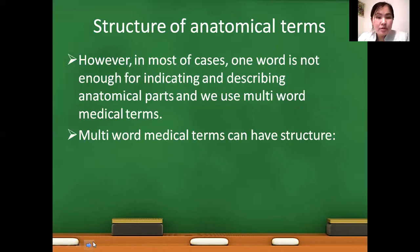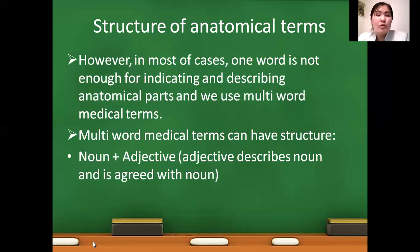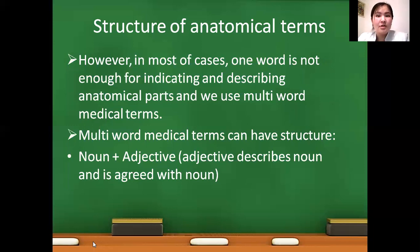But in most cases one word is not enough to indicate and describe anatomical parts. In this case we use multi-word structured medical terms. These types of terms have two structures. The first is noun and adjective structure, also known as agreed attribute terms, where the adjective describing the noun is agreed with the noun — meaning the adjective matches in gender, number, and case with the described noun.